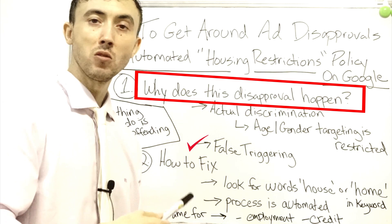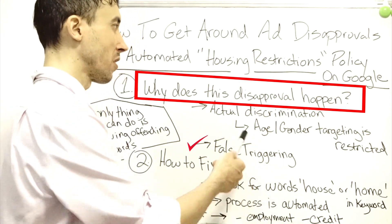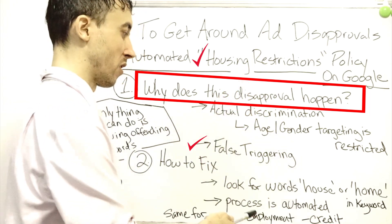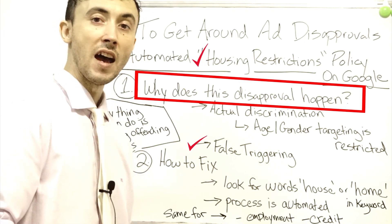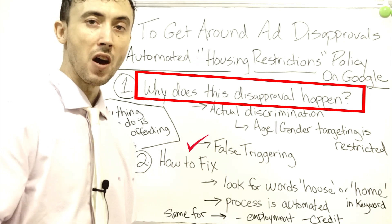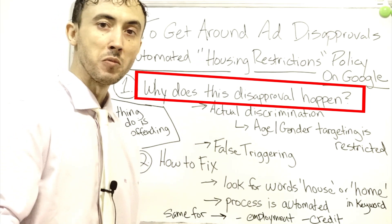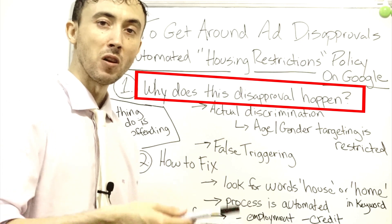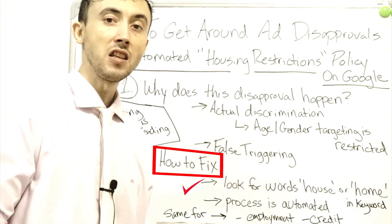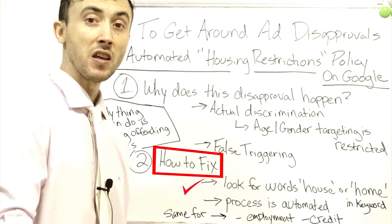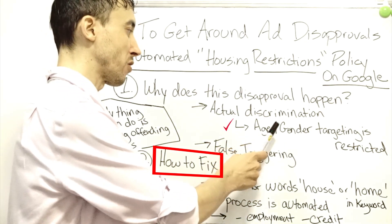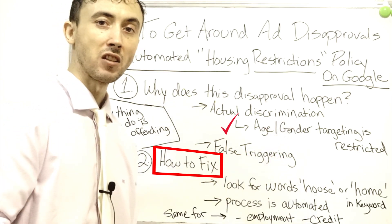There's been a lot of issues with false triggering — Google's system telling you that you have housing discrimination violations, or employment or credit violations, when you don't. One issue that I've seen coming up often is specifically with your keywords. If your keywords have the words 'house' or 'home' in the keyword itself, because of how their system is programmed, they will actually restrict the age and gender demographic settings at that particular point in time.